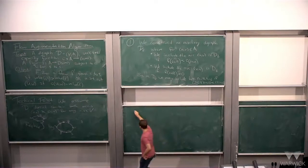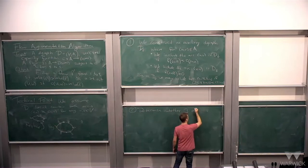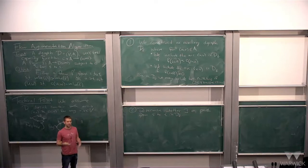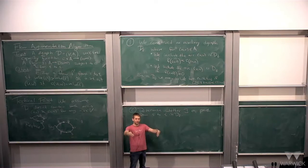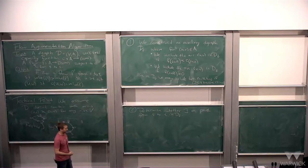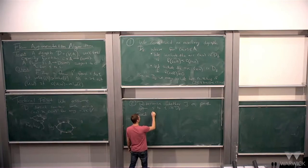The second step is to determine whether there exists a path from s to t in D_f, which we can do fairly quickly using algorithms we've already seen. You just start with s, look at arcs coming out of it, include those vertices, and keep expanding. If you reach t, you found the path; if not, there's no path.